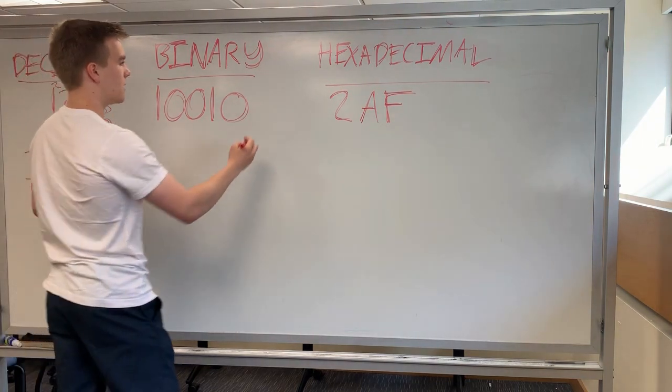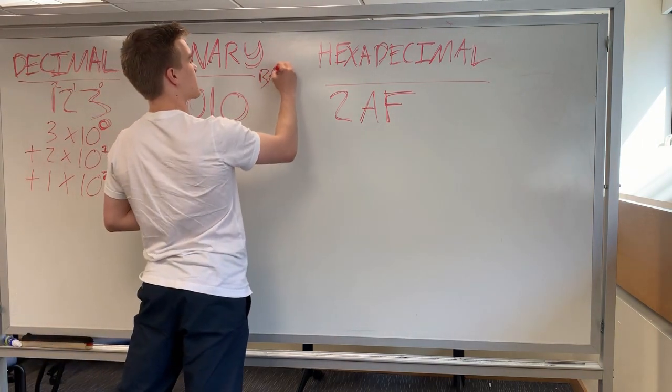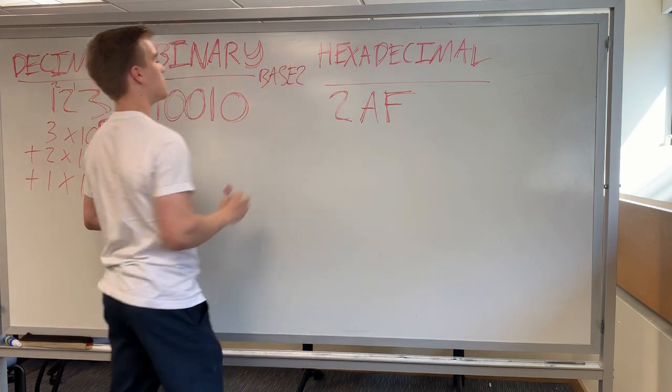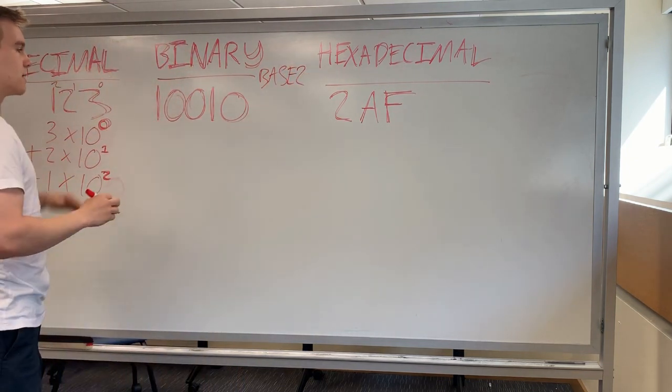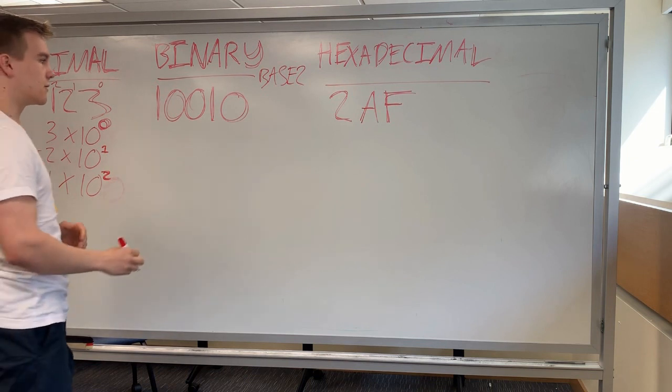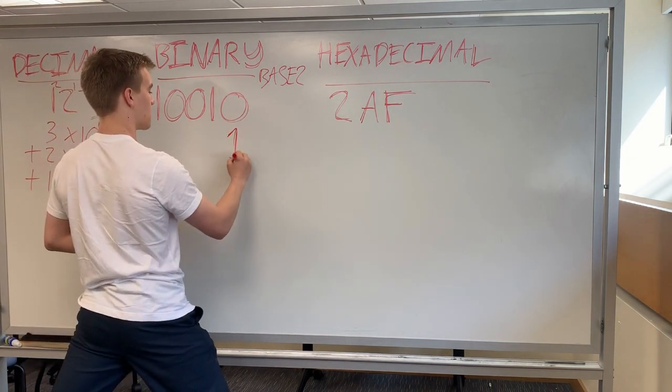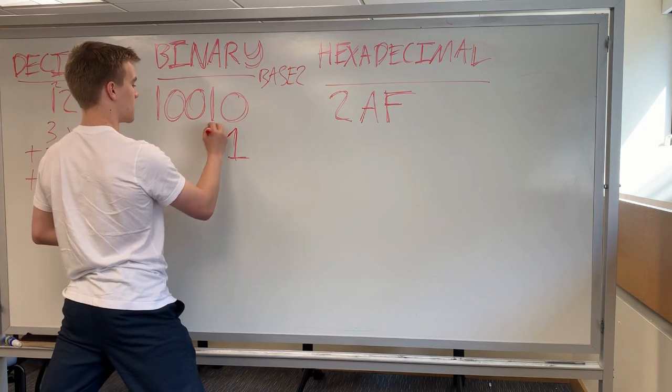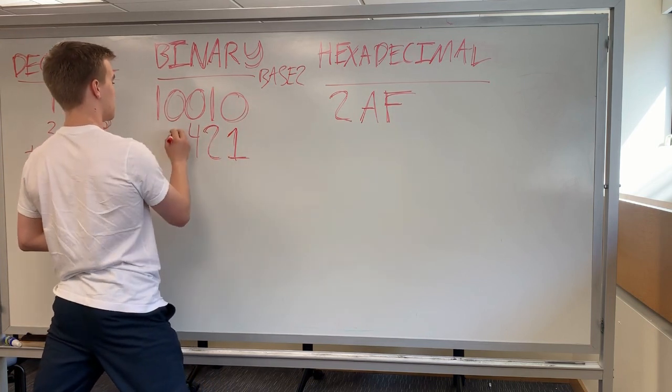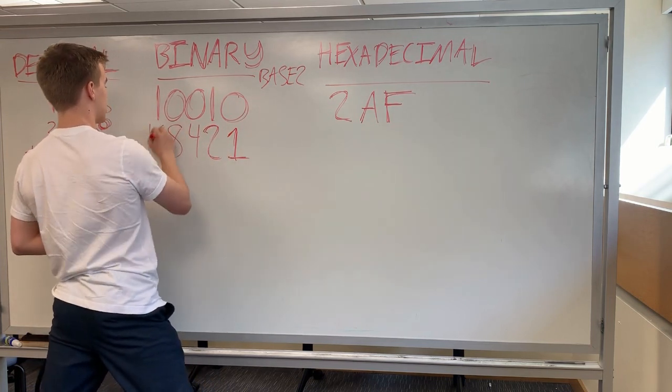In binary we do the same thing, but it's base 2, so the value of the places increases, or multiplies by 2 each time. So this is similarly the 1's place, this is the 2's place, 4's, 8's, and then 16's.